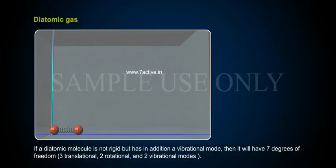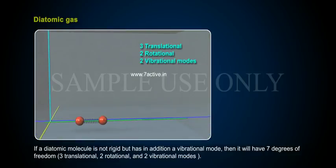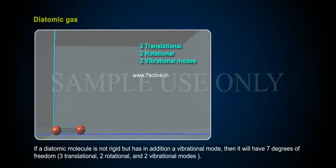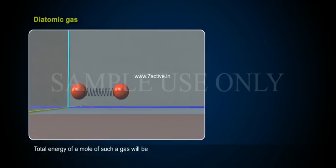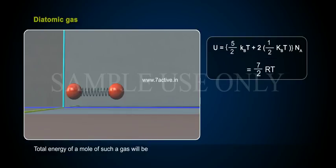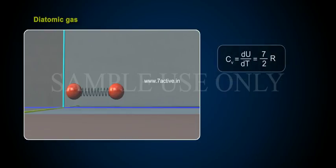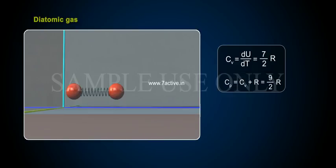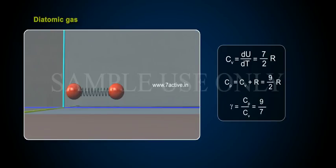If a diatomic molecule is not rigid but has in addition a vibrational mode, then it will have 7 degrees of freedom: 3 translational, 2 rotational, and 2 vibrational modes. Therefore, the total energy of a mole of such a gas is U = 5/2 k_B T + 2 × 1/2 k_B T × N_A = 7/2 RT. Therefore, Cv = dU/dT = 7/2 R, Cp = Cv + R = 9/2 R, and γ = Cp/Cv = 9/7.